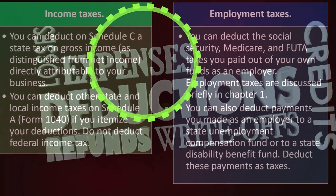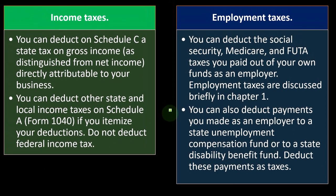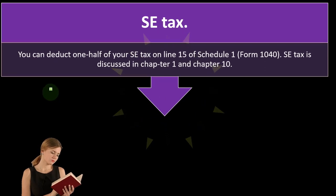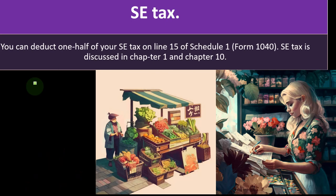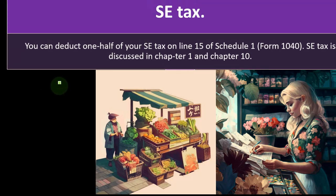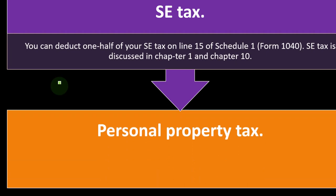It's all quite straightforward. You can also deduct payments you made as an employer to a state unemployment compensation fund or a state disability benefit fund — deduct these as taxes. For the self-employment tax, you can deduct one half on Line 15 of Schedule 1, Form 1040. That deduction is not on Schedule C because it would create a circular reference — deducting it on Schedule C would reduce net income, which would affect the self-employment tax calculation. So it goes on Schedule 1 instead.